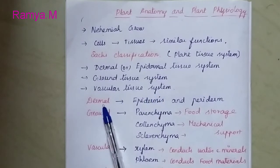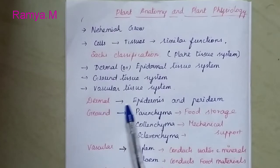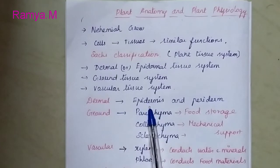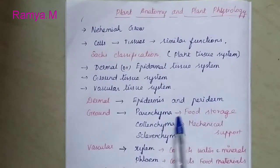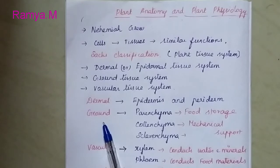The dermal tissue system is the outermost layer. It consists of two components: one is epidermis, another one is periderm.